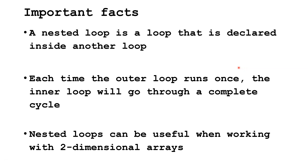Some important facts. A nested loop is a loop that is declared inside another loop. It could be a for loop, a while loop, a do-while loop — doesn't matter, as long as it's a loop inside a loop. Each time the outer loop runs once, the inner loop will go through a complete cycle, and a complete cycle depends on the particulars of the inner loop. We'll look at an example in a little bit.